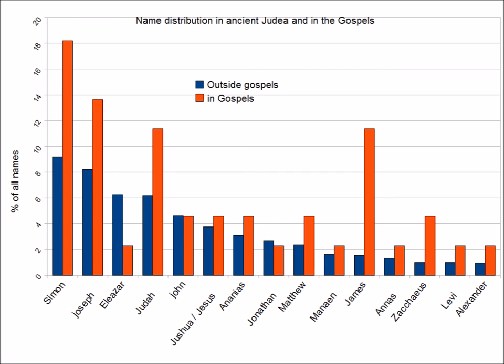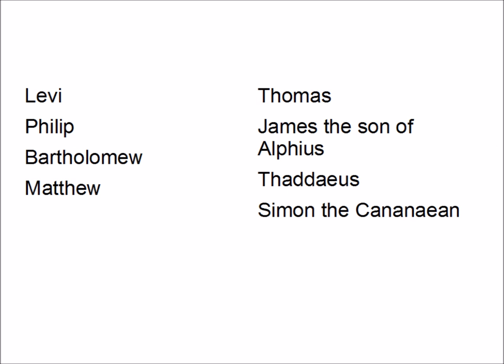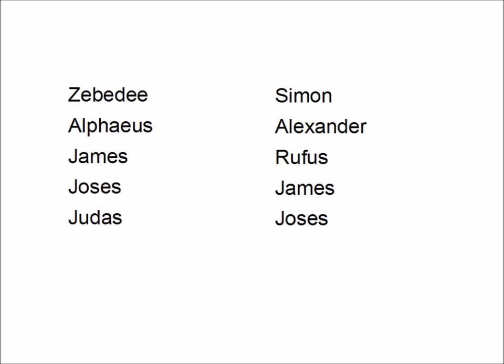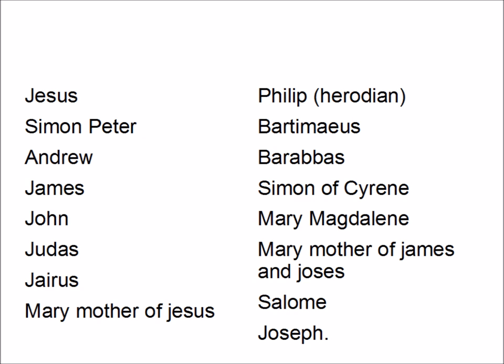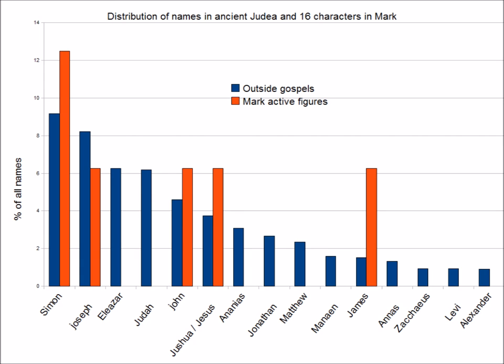Mark mentions 38 named people. Of these, eight are only mentioned once with no actions being ascribed to them. Ten are mentioned as relatives of characters in the story with no actions being ascribed to them either. A further four — John the Baptist, Herod, Herodias, and Pilate — are historical figures, leaving 16 characters who take part in the action. Even the name distribution of these 16 is a fair fit. It is hard for mythicists to escape the conclusion that Mark was working from a list of names of real people, either written down or from oral tradition.